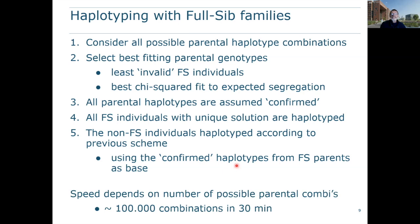The speed is much lower when using pedigree information — it depends on the number of possible parental combinations. On a normal PC, we can check about 100,000 combinations in half an hour. That is also the default maximum set in the software, but it can be changed manually.